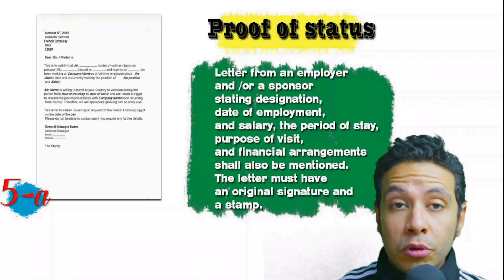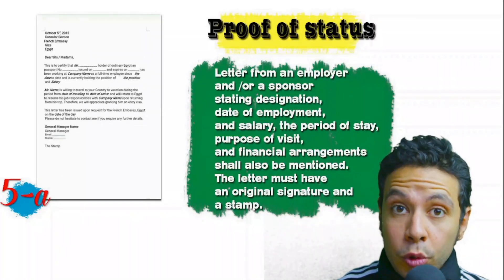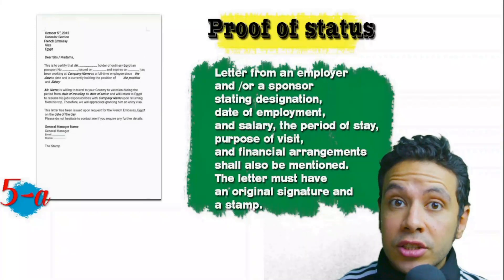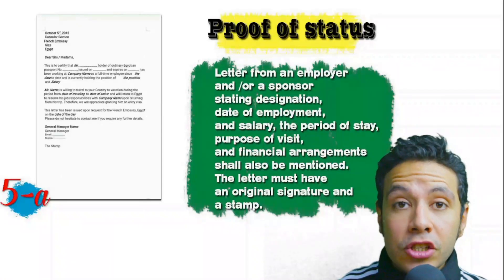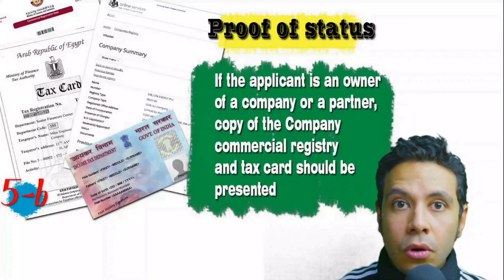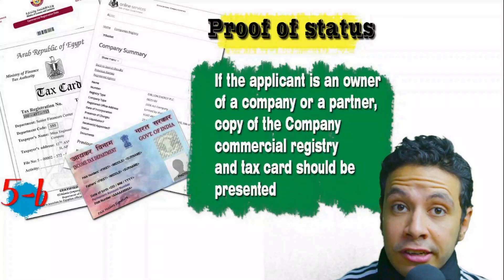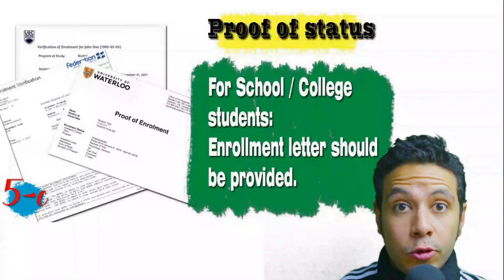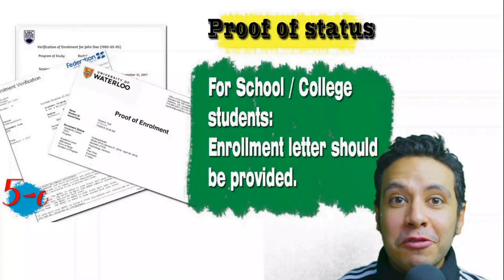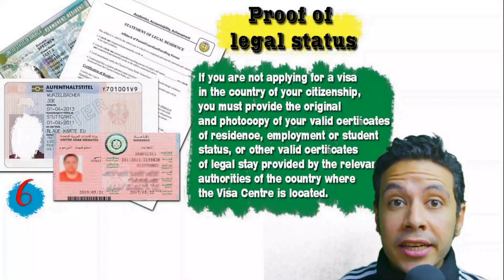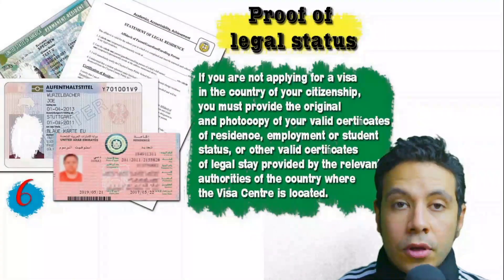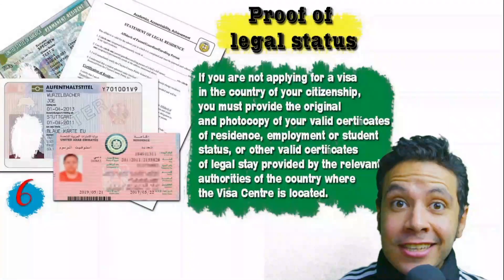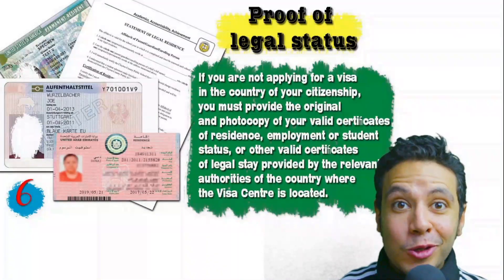In most visa application processes you will need to provide proof of status. If you are an employee, provide a letter from your employer or HR department mentioning your name, work details, salary, address, and contact numbers — with an original signature and stamp. If you own a business, present your commercial registry and tax card. If you are a student, provide an enrollment letter from your university or school. If you are applying from a country different from your own, you will need to provide proof of legal residence in that country.